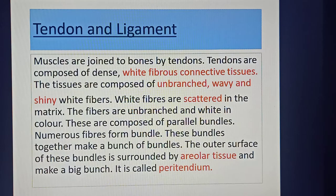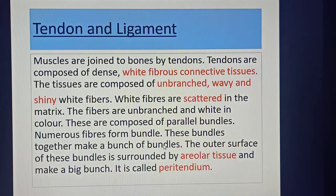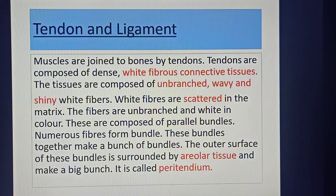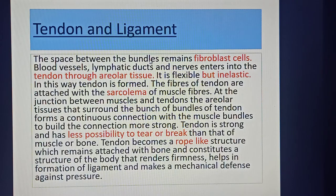The fibers are composed of parallel bundles; numerous fibers form a bundle and these bundles together make a bunch. The outer surface of this bundle is surrounded by areolar tissue forming big bands — this is called the peritendium, which is the covering of the tendon. The space between the bundles contains fibroblast cells, which is also a type of proper connective tissue. Blood vessels, lymphatic ducts, and nerves enter into the tendon through areolar tissue.